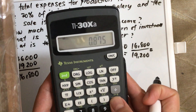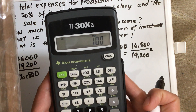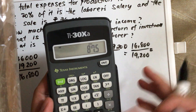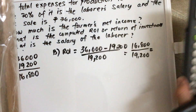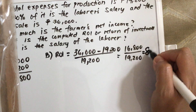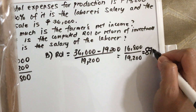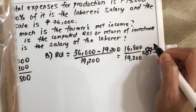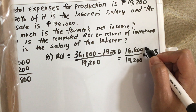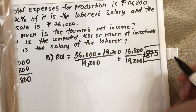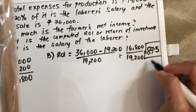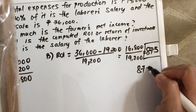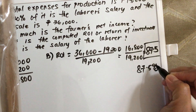We multiply by 100 since it's a percent, so it's equal to 87.5 percent.